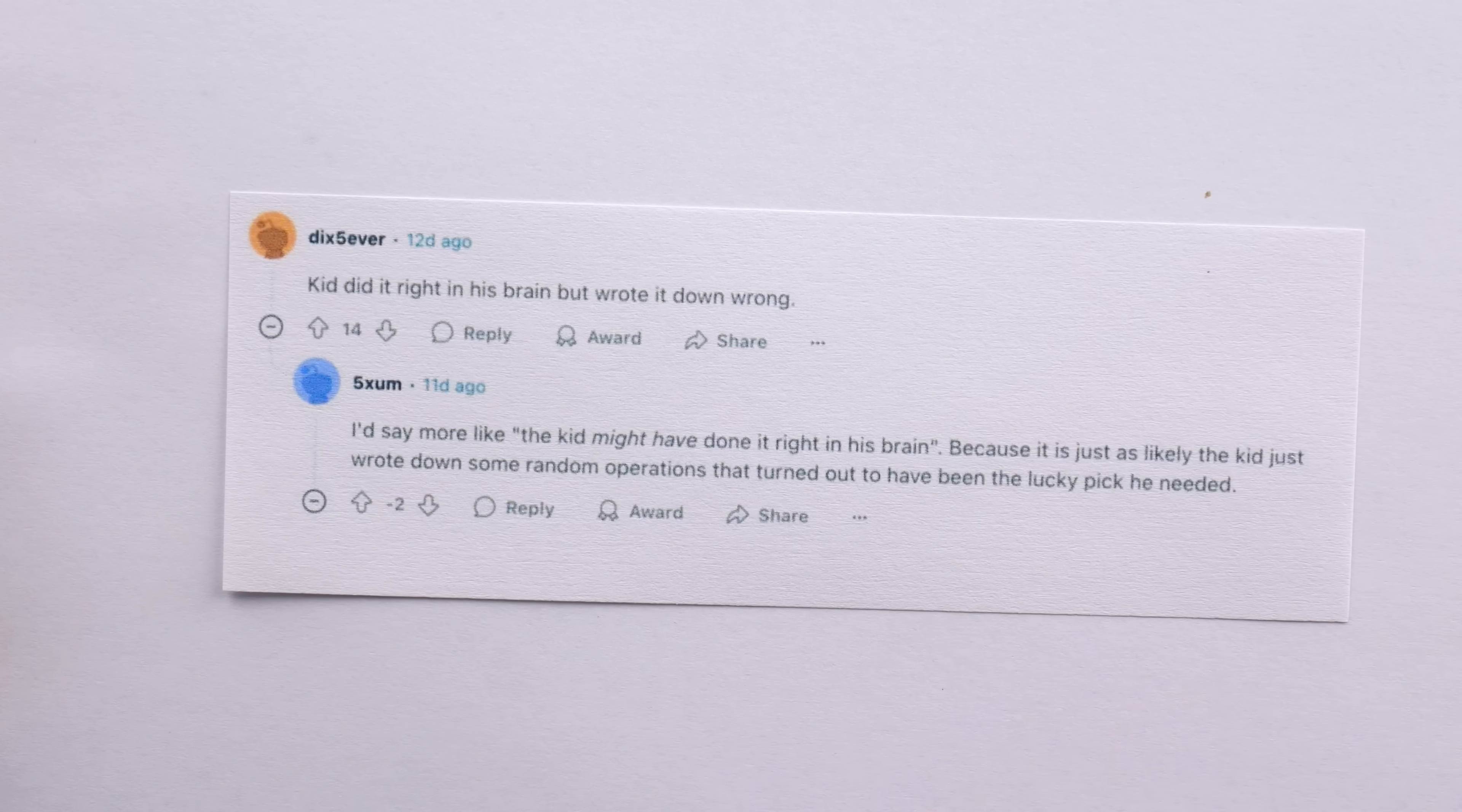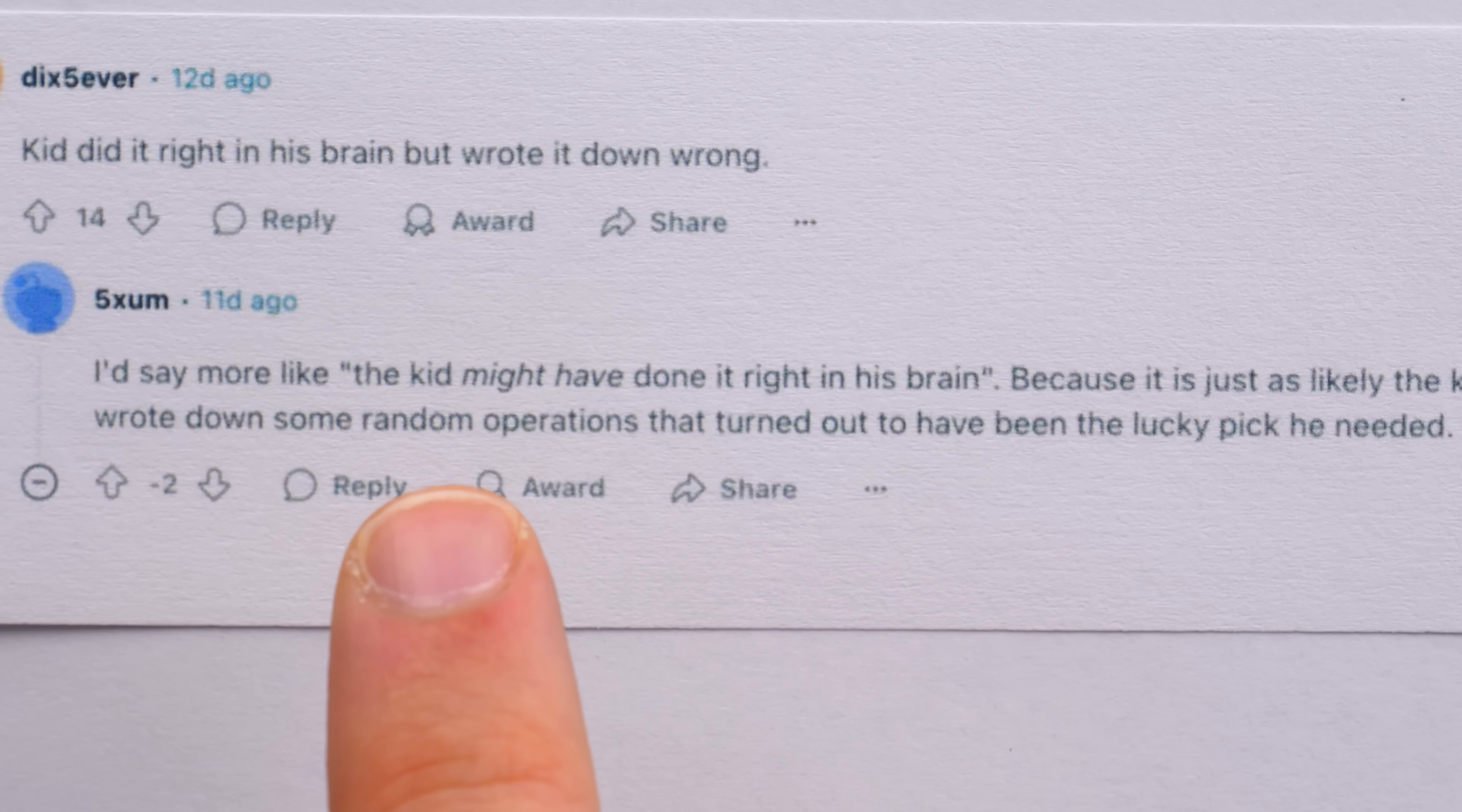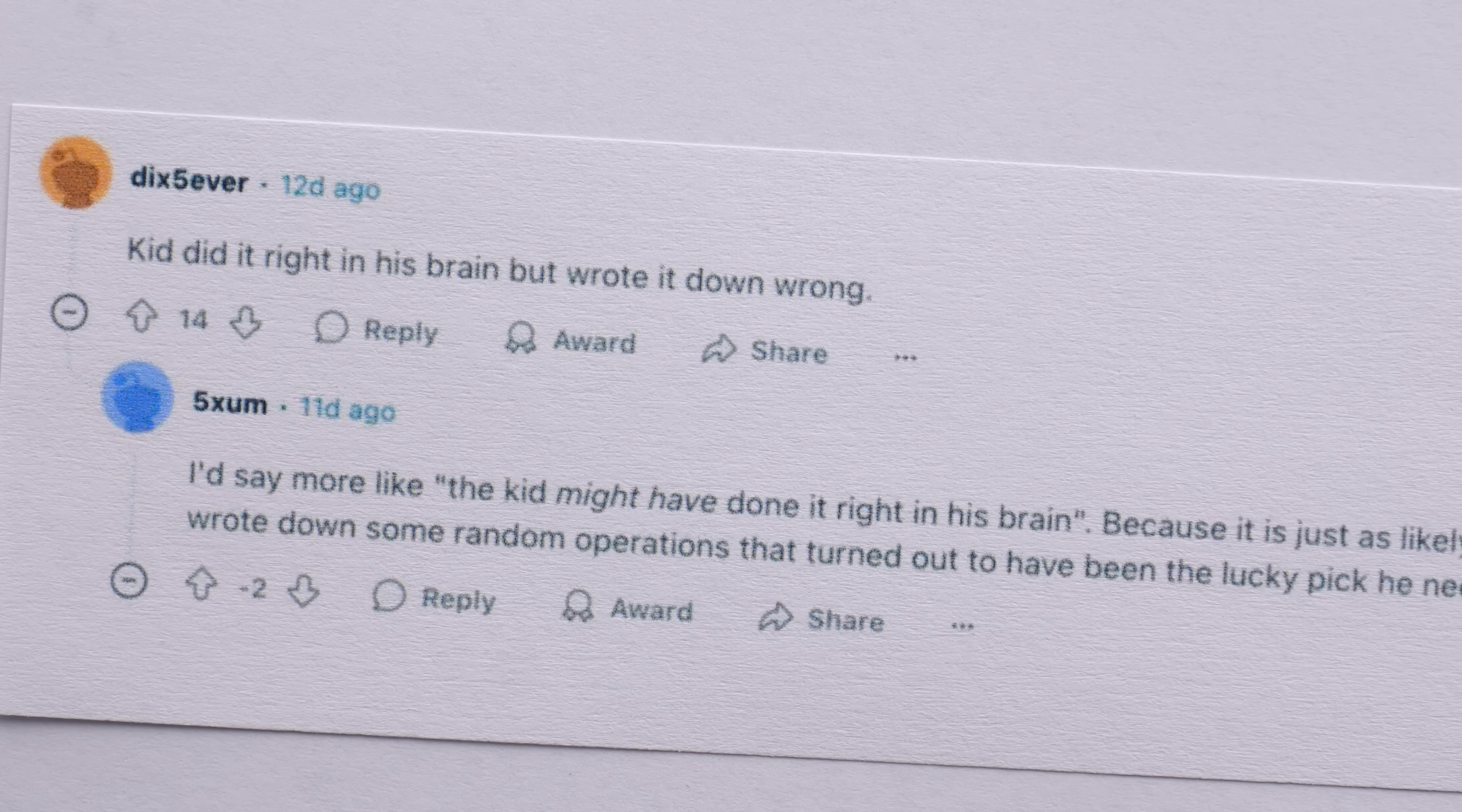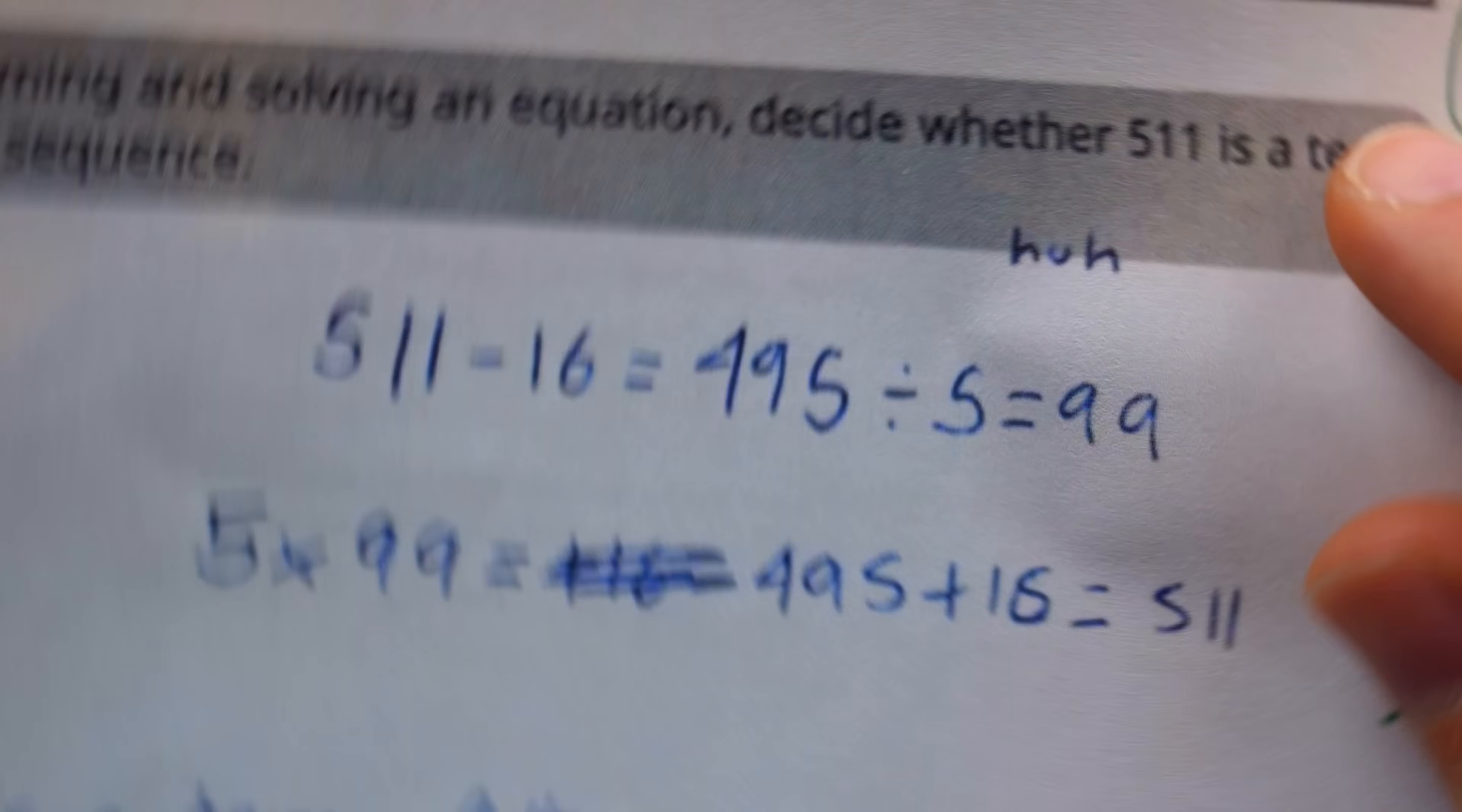This guy said, kid did it right in his brain, but wrote it down wrong, and then a reply. I'd say more like the kid might have done it right in his brain, because it is just as likely the kid just wrote down some random operations that turned out to have been the lucky pick he needed. This is crazy. Just as likely? Does this guy know how many numbers there are? I can think of like at least a dozen numbers, so just lucking into relevant calculations here doesn't seem very likely.